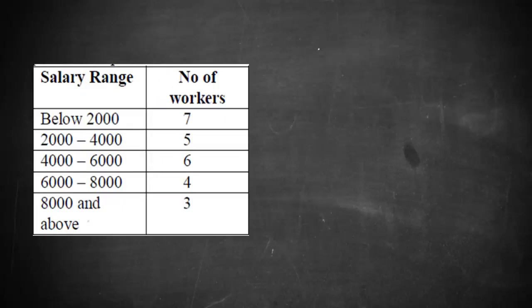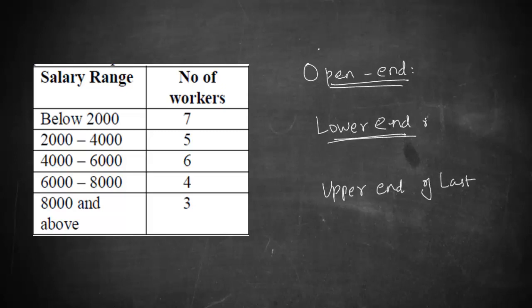The third method was open-end classes. What happens in open-end classes is that a class limit will be missing in the lower end of the first class interval and in the upper end of the last class interval you will be missing the limits.